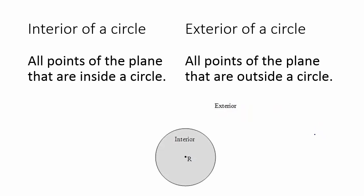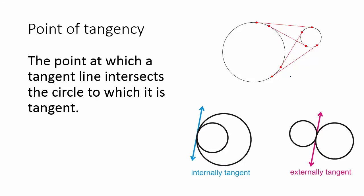Interior of a circle: all points of the plane that are inside a circle. Exterior of a circle: all points of the plane that are outside a circle. Point of tangency: the point at which a tangent line intersects the circle to which it is tangent.